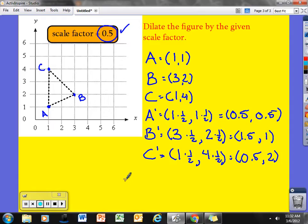If I want to write that a little nicer, I know that my new A prime is 5 tenths, which I could write as half, half. B prime is 1 and a half x value, 1 for the y. And C prime is a half and 2.